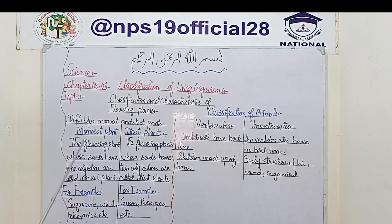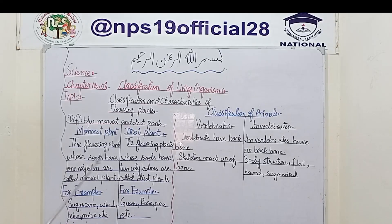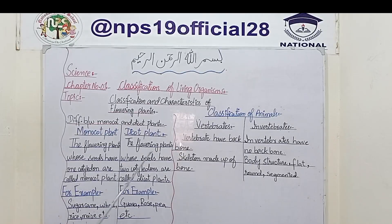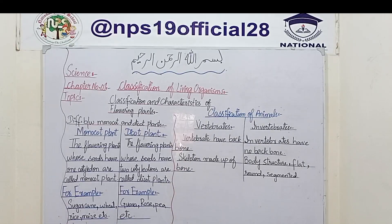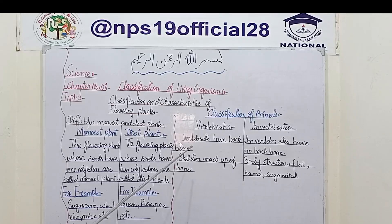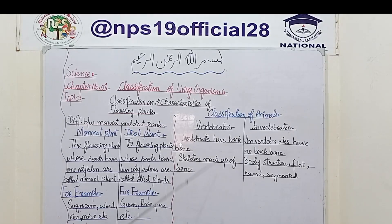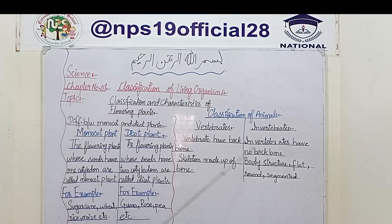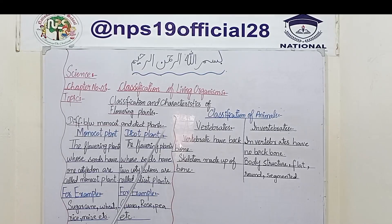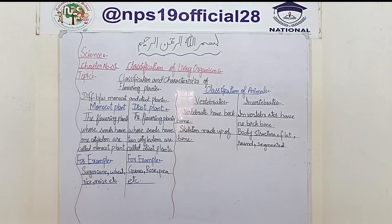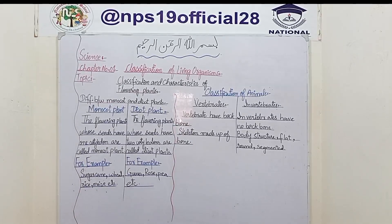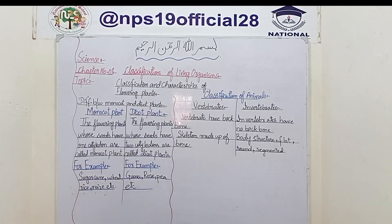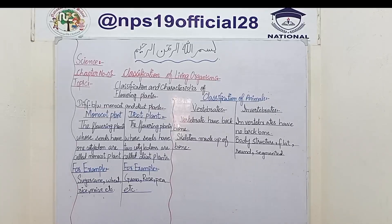So students, in today's video we have covered flowering plants and their two groups — monocot and dicot plants — and we have classified animals into vertebrates and invertebrates. In the next video, we will discuss the classification of vertebrates and invertebrates in detail. If you found this video helpful, don't forget to share it with your fellow friends and family. Till the next video, take care and Allah Hafiz!